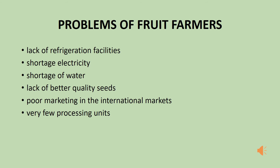Shortage of electricity is another problem. Most fruit farmers depend on tube wells, so without electricity they cannot provide water to their fruit trees, reducing productivity. There is also a lack of proper transportation and roads from growing areas to main cities. Without better roads, farmers cannot supply fruit in time, and since fruit is perishable, delays cause it to start getting ruined.